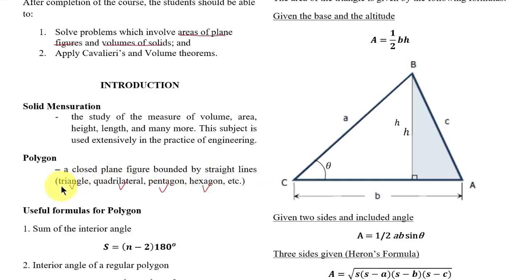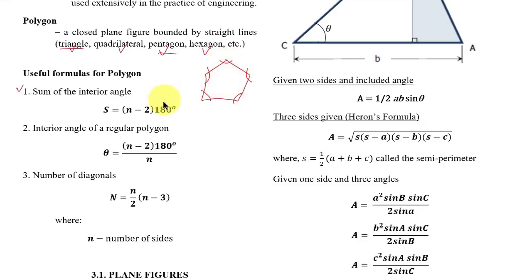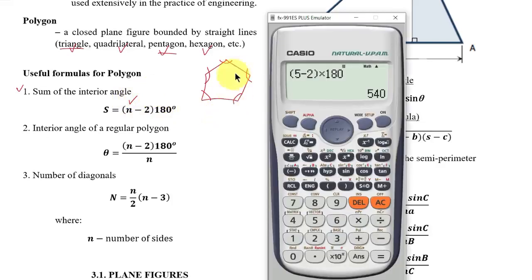We already discussed triangle in trigonometry, as well as pentagon and other regular polygons. Now for useful formulas for polygons: number one, sum of interior angles. For example, if you have a pentagon, the formula to solve the sum of all five interior angles is (n − 2) × 180°, where n is the number of sides. For a pentagon, that is (5 − 2) × 180° = 540°.